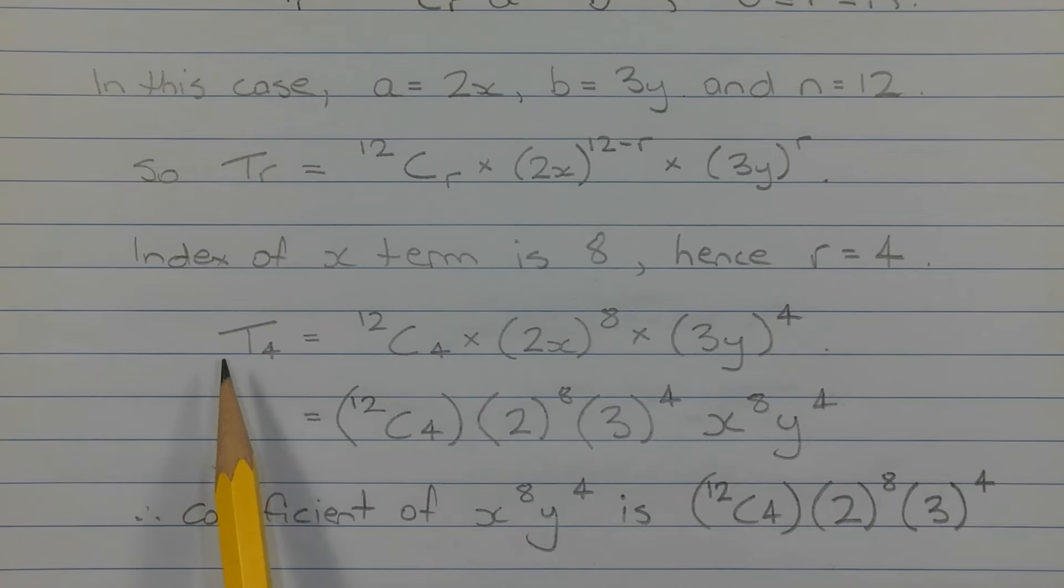So t4 is equal to 12 choose 4 times 2x in brackets to the power of 8 times 3y in brackets to the power of 4.